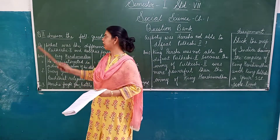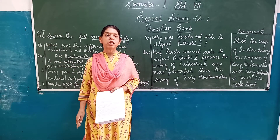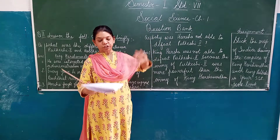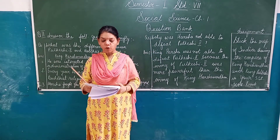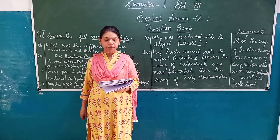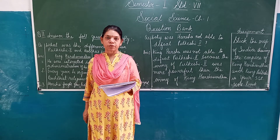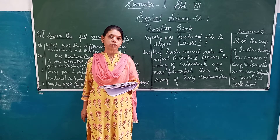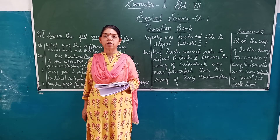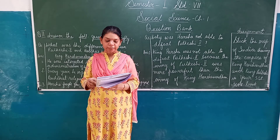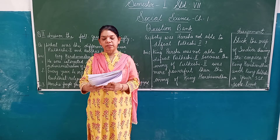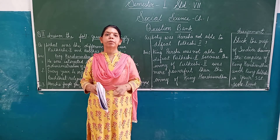Here we come to the end of question number 2. We proceed with question number 3 of the question bank: answer the following questions in one or two sentences. Question 1: Which plays were written by Emperor Harshavardhan? Harshavardhan, as explained earlier, was a great lover of art and literature. He had written three plays: the first is Nagananda, the second is Ratnavali, and the third is Priyadarshika.